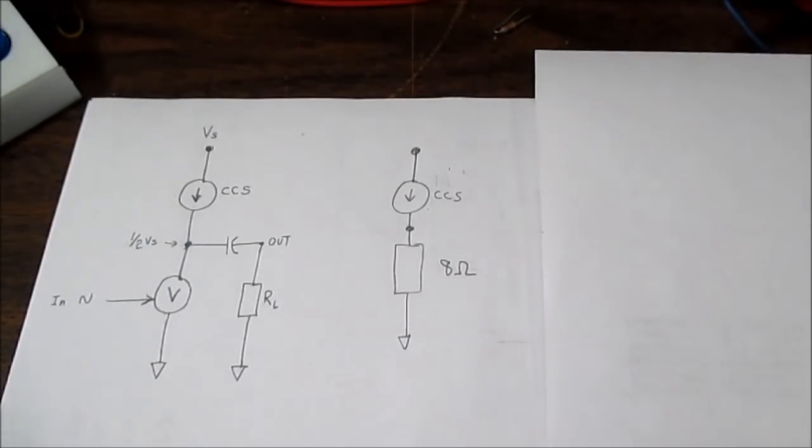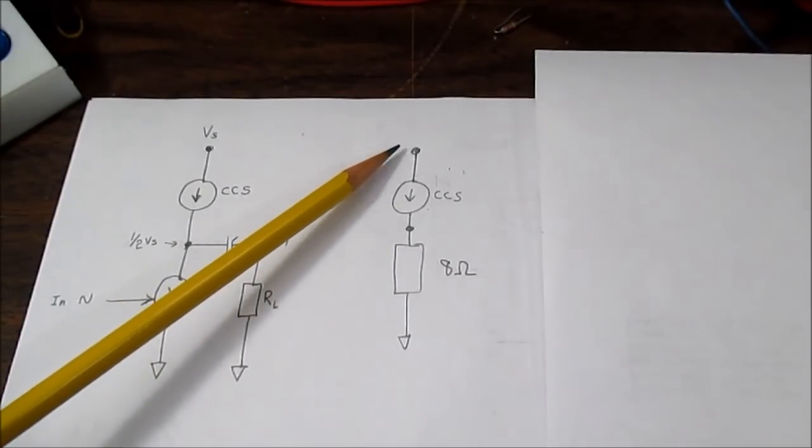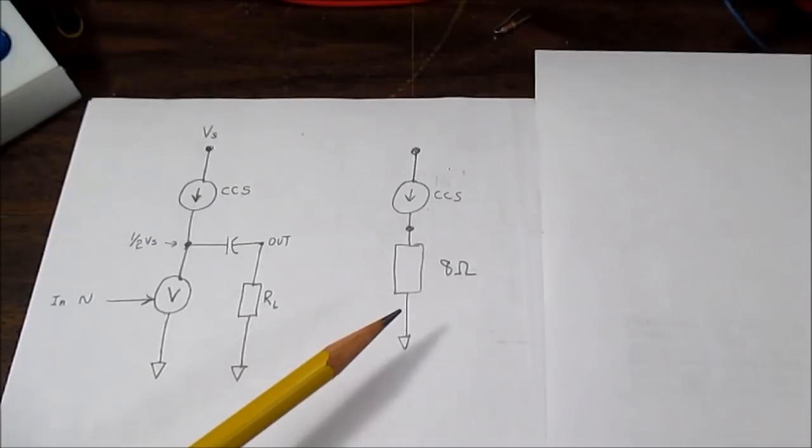So in practical use, that current still might be too much, because you have to think of the power you're going to use. A class A amplifier is going to dissipate a lot of power. This thing is only going to be around 20% efficient under optimal conditions. So 12 volts drawing 3 quarters of an amp, that's 9 watts. So you'll have to make sure you have plenty of heat sinking, because that's a continuous 9 watts. Whether a signal's flowing or not, whether the thing's just sitting there idle, it's going to consume 9 watts. It's a class A amplifier.